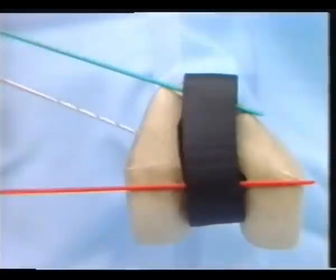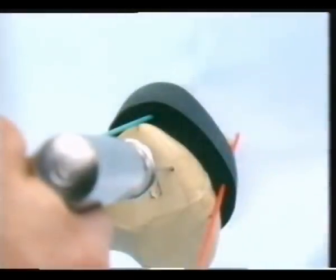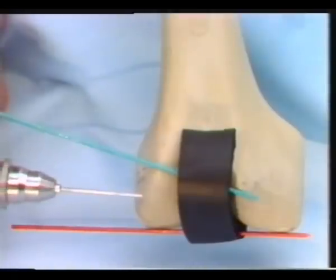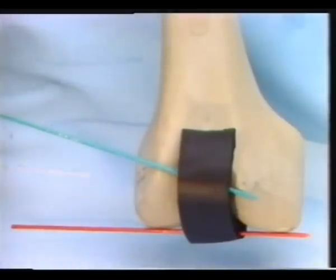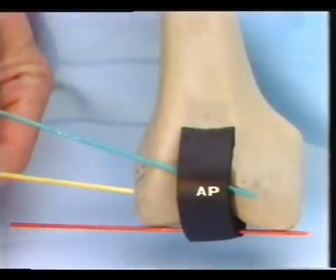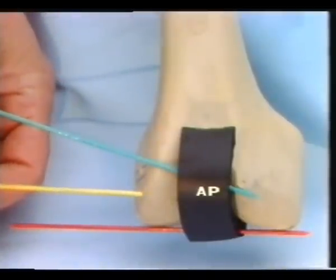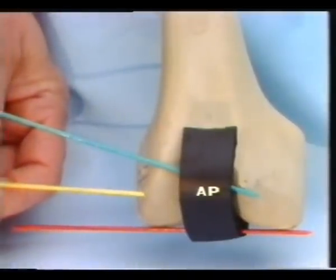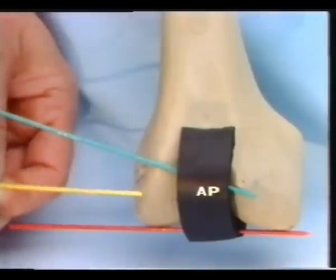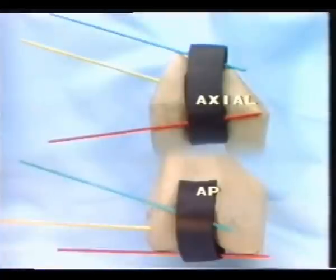A third yellow wire is inserted immediately distal to the window. On the plastic model, pre-drilling with the two millimeter drill bit is necessary. This K wire combines the directions of the first two wires. Surgeon and assistant make sure that the wires in both planes are parallel, as demonstrated here.